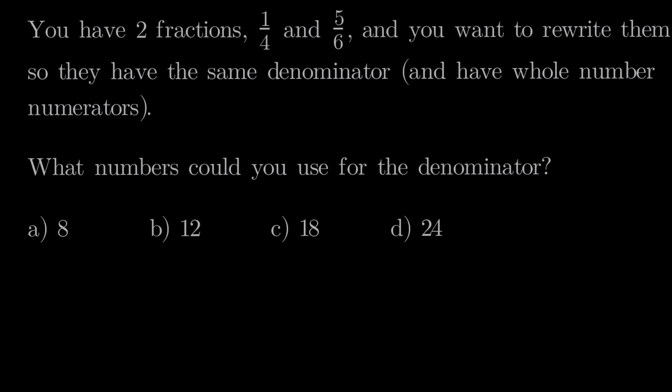So for example, for 4, some multiples of 4 would be 4 times 1 is 4, 4 times 2 is 8, 4 times 3 is 12, and so on. Those are multiples of 4. Let's pause here and look at why we have to pick a multiple of 4 and 6, why we can't just pick any number, but we have to pick a multiple of our denominators.